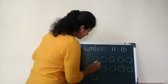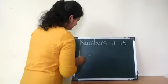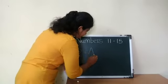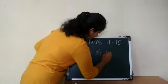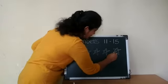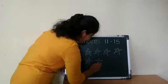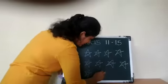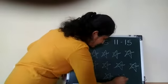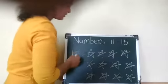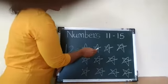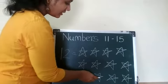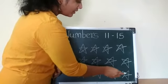Now the next number is 1, 2, 12. 1, 2, 3, 4, 5, 6, 7, 8, 9, 10, 11. 1, 2, 3, 4, 5, 6, 7, 8, 9, 10, 11, 12.